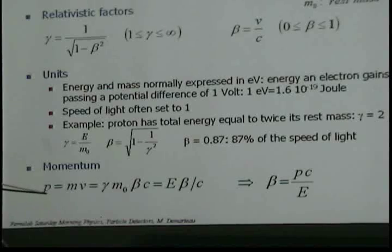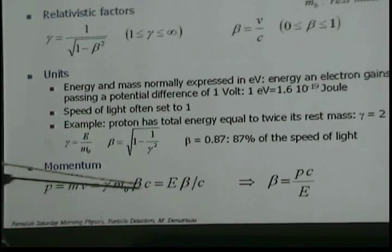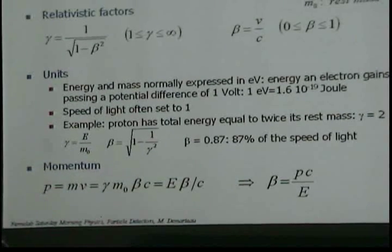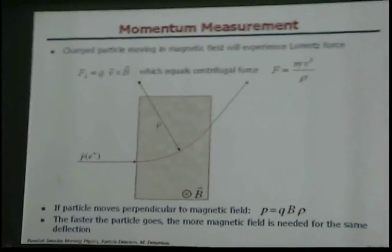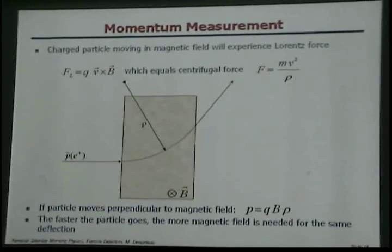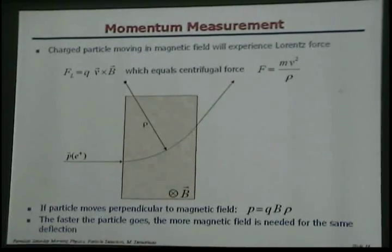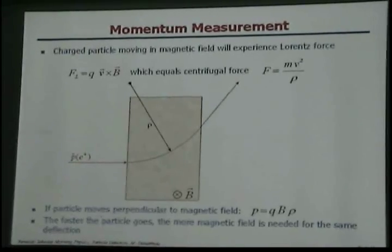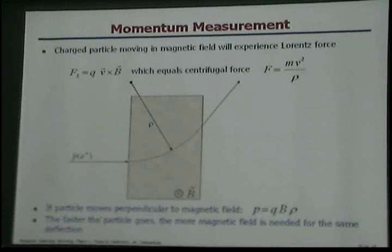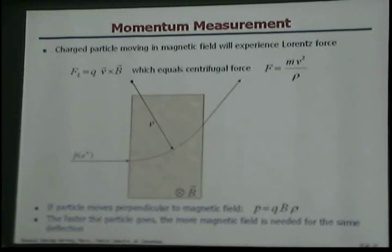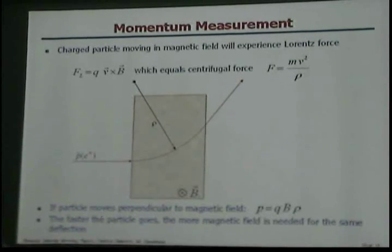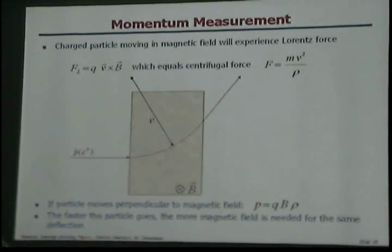And then you can relate the momentum to the energy and the velocity through this way. Now, one more thing is, in almost every detector, we want to measure the momentum of a particle. How do you measure the momentum of a particle? We do that with a magnet. So, almost every detector that I will show you has a magnet somewhere.